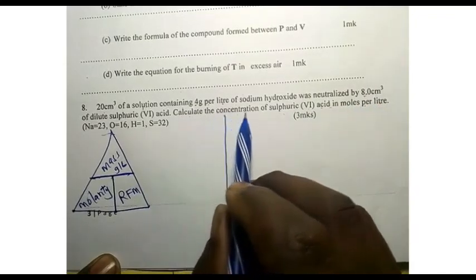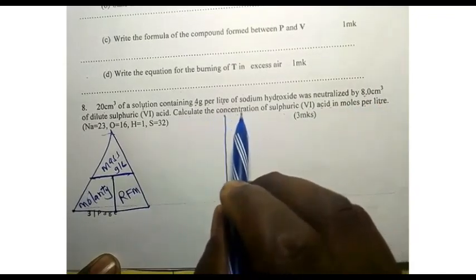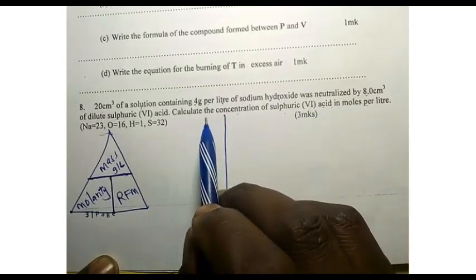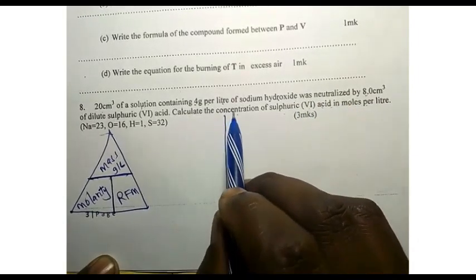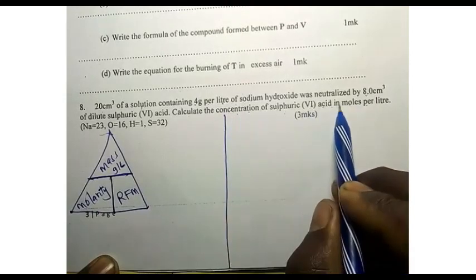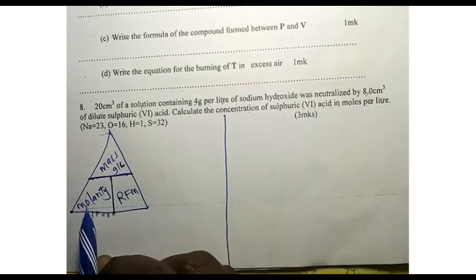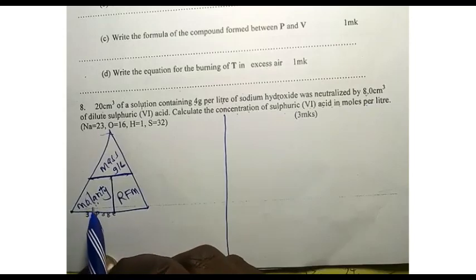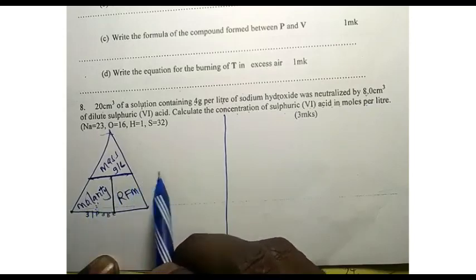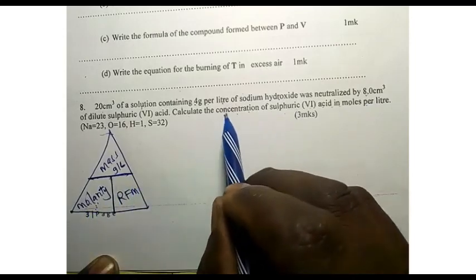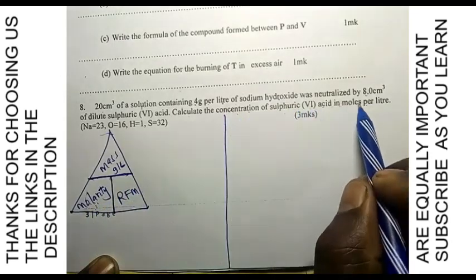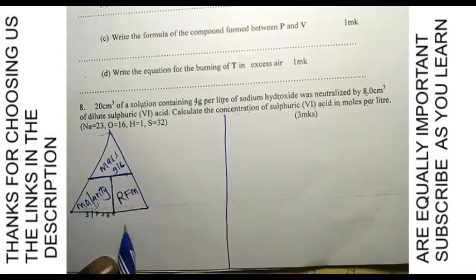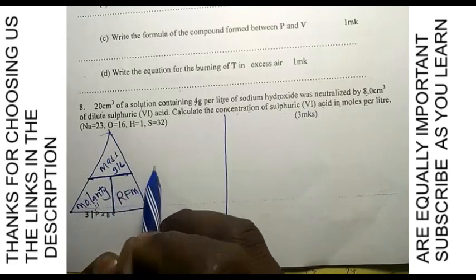We want to find the concentration of sulfuric acid in moles per liter. Any time you hear the word concentration in moles per liter, it simply means molarity, because molarity is the number of moles in one liter. I have given this triangle here.